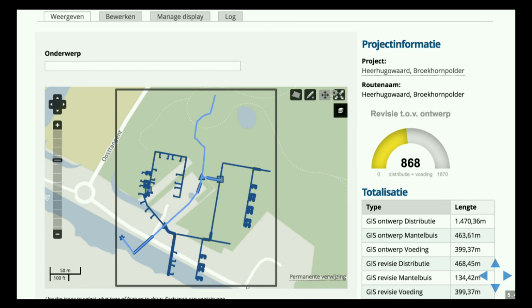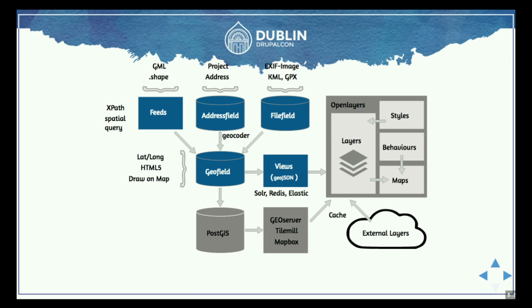If you zoom in for a certain map area, you have the gutters, the trenches, and the holes where the whole fiber optic cable system comes together. This is built using an open source Drupal distribution called Cartaro, which has the best Drupal 7 integration of modules. The CAD drawing, made with AutoCAD, is eaten by Feeds. Feeds throws it through a Geocoder into a Geofield, then stored in a PostGIS database. GeoServer picks that up and makes it into a WFS — an open standard for vectors on the map — and then we style it with behaviors and present it to the end user within Drupal.